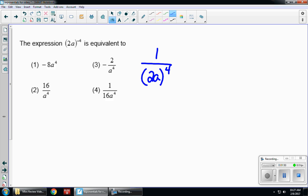Your other laws of exponents tell you that when you have an exponent on the outside of parentheses, each piece inside gets that. So this is 1 over 2 to the 4th, a to the 4th. 2 to the 4th is 16, so this is 1 over 16a to the 4th. Choice 4.